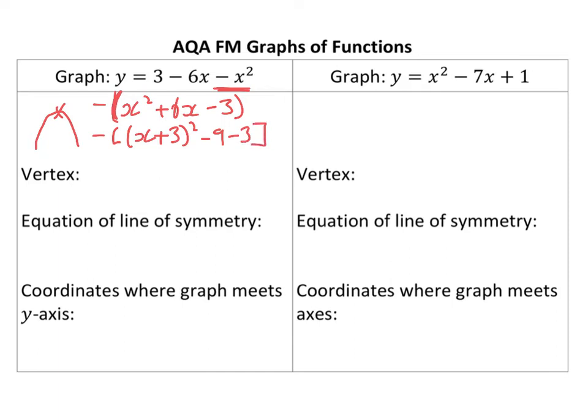Okay, and that's going to give me 12 minus x plus 3 all squared. Now, that means that the vertex, the turning point, is going to be at negative 3, 12, and the equation of line of symmetry. I should have said, the 12 comes from there, and the minus 3 comes from there.